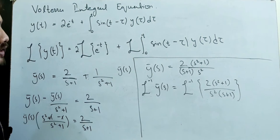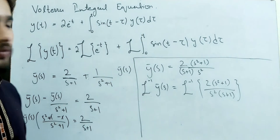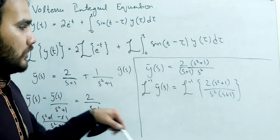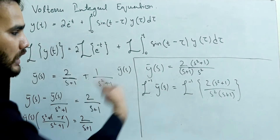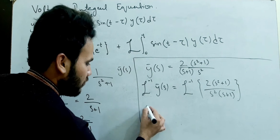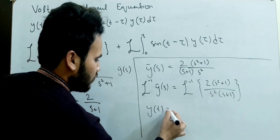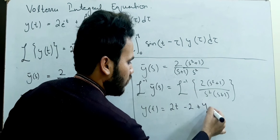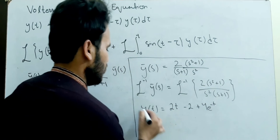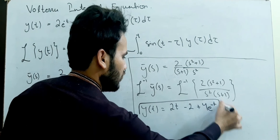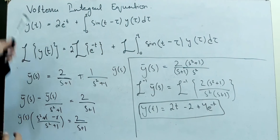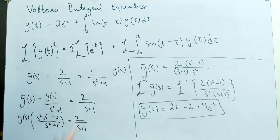For the inverse Laplace transformation I have already published a separate video, so please see that first. After taking the inverse Laplace, we have the result: y(t) = 2t minus 2 plus 4·e to the power minus t. This is our required solution of this Volterra integral equation. Now I have one more example to show you.